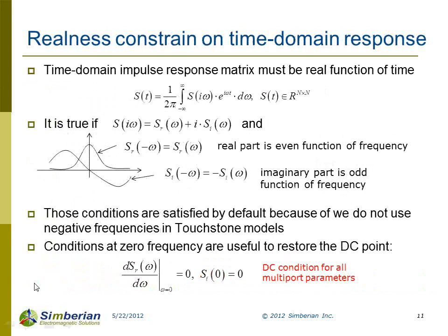With passivity enforcement on such rational approximation, the model becomes causal and defined from DC to infinity — passivity enforcement for a complete matrix model is a very essential part of this. With a rational approximation, we can use fast recursive convolution algorithms and get results consistent in time and frequency domain across different solvers. Unfortunately, not all touchstone models are suitable for either approach, so we have to distinguish between models that can be used and those that cannot.